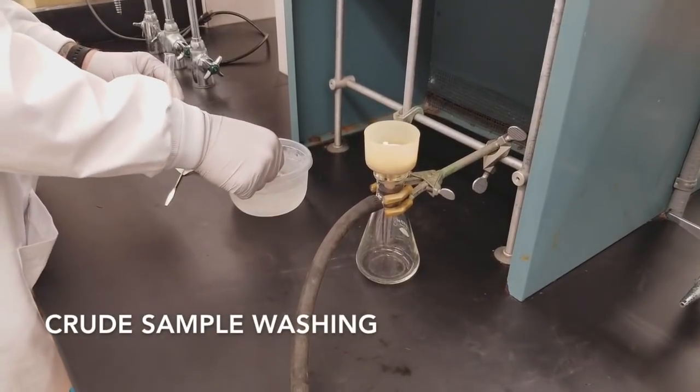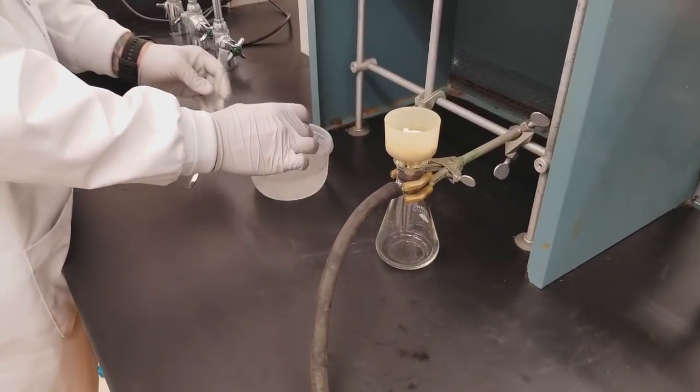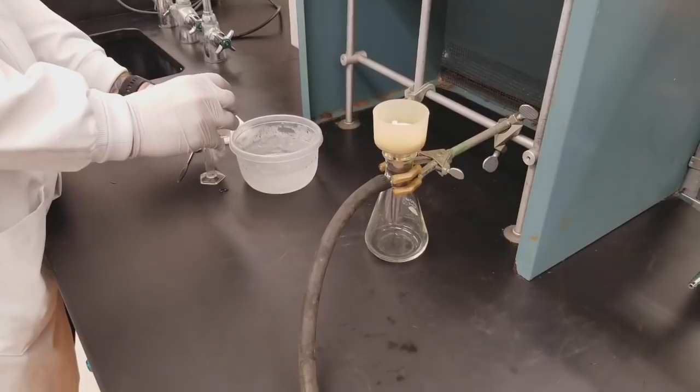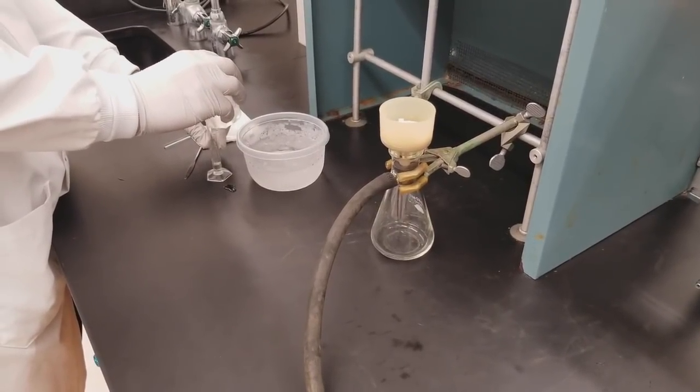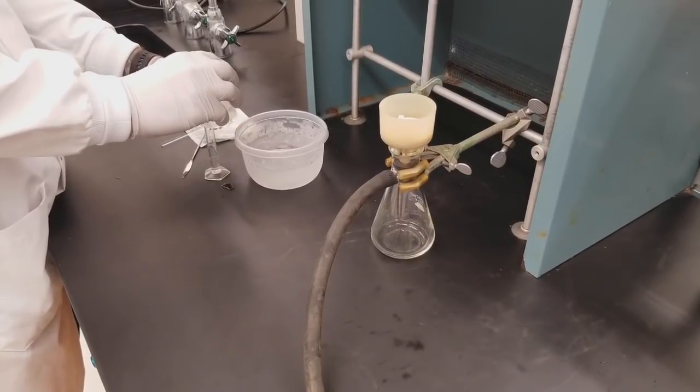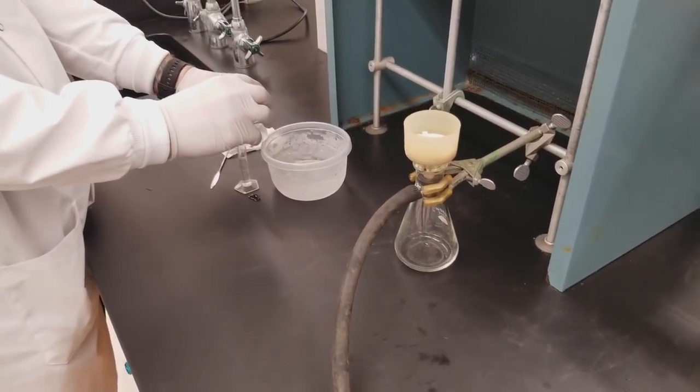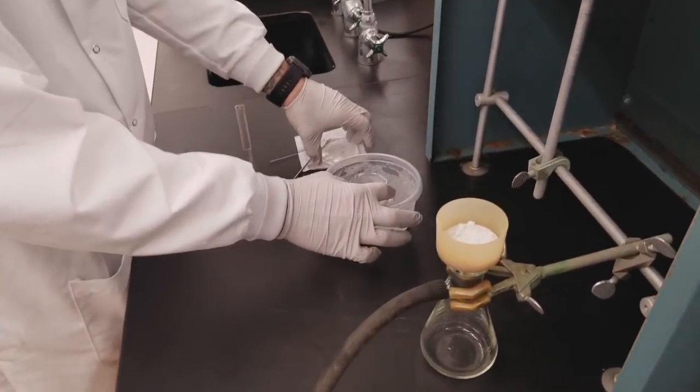At this point, we want to make sure that we wash our crystals and we're going to do that with some cold solvent. You want to measure probably no more than five milliliters for this washing step. It's really important that we use cold solvent here so that we do not dissolve any of our crude sample.